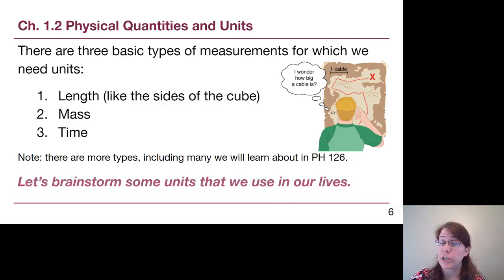In terms of what units we'll actually be working with, there are three basic types of measurements in Physics 125: length, like the sides of the cube we just talked about; mass, similar to my cat Penelope, although when we get to chapter four we'll understand there's a difference between mass units like grams and kilograms and weight units like pounds or newtons; and time, which we use on a daily basis.